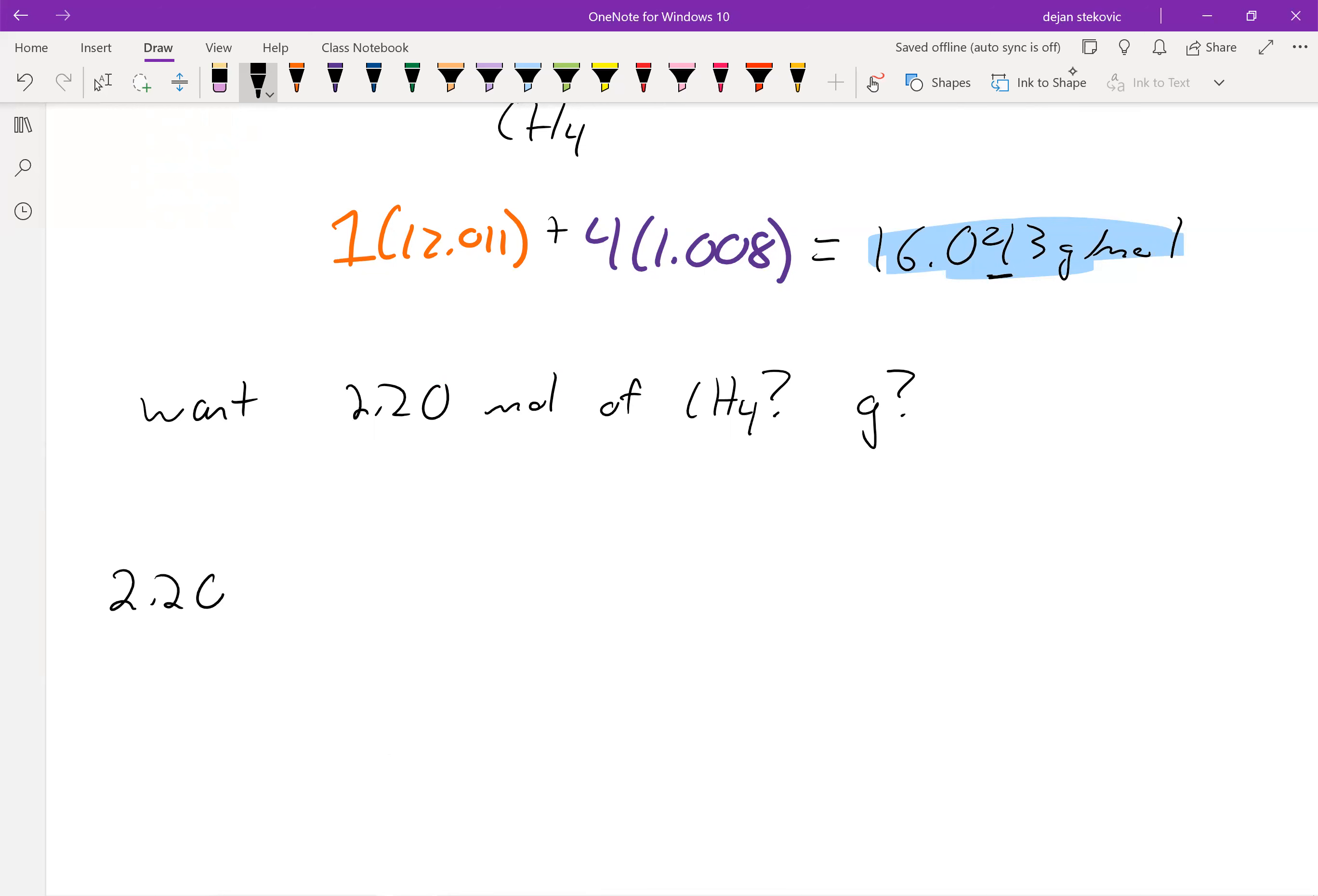So what we want to do is figure out how many grams that is. So again, we have 2.20 moles of CH4. And we know that CH4 has a molar mass of 16.043 grams per mole. Remember that the number goes with the numerator. So the 16 goes with the grams.